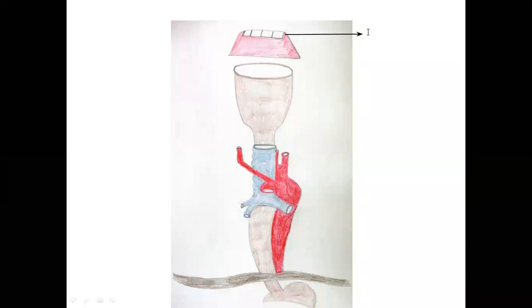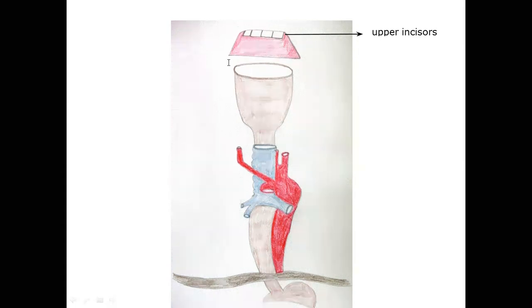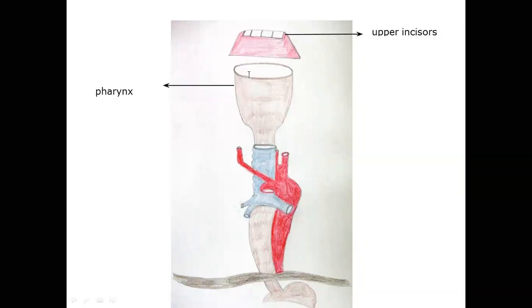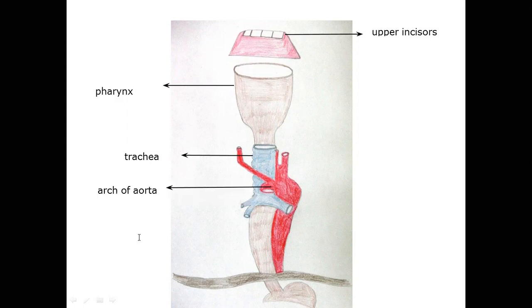This right here is the upper incisors. The second structure is the pharynx — this structure is the pharynx. The third structure is the trachea, right here. And then we have the arch of the aorta, which is right here.